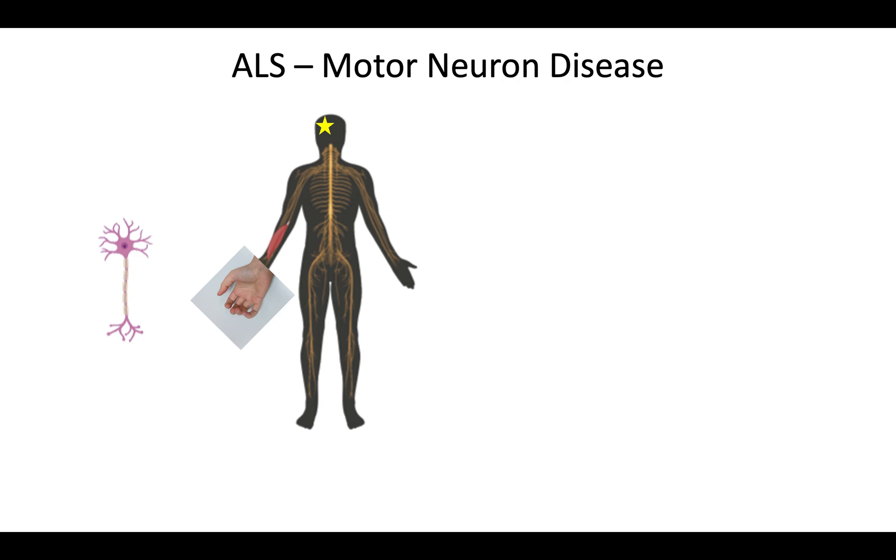Motor neurons are the nerve cells that carry messages from your brain to your muscles in order to move. That means in ALS, when these motor neurons begin to die, this causes the person to have muscle weakness.